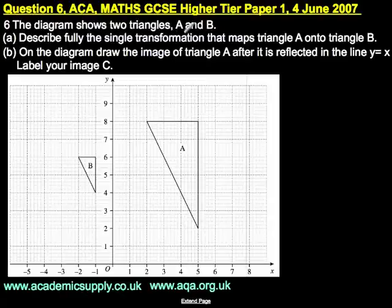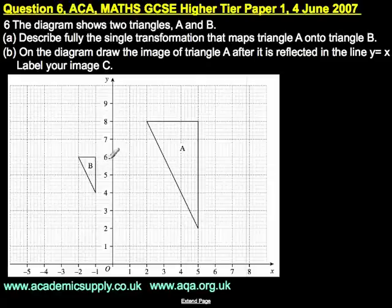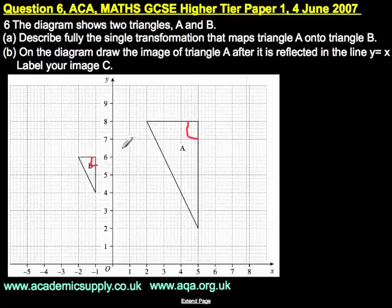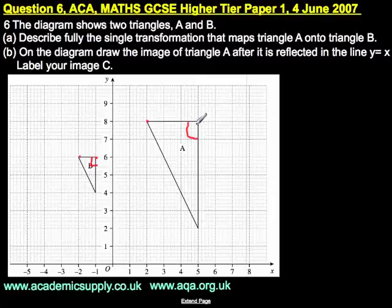The diagram shows two triangles, A and B. Describe fully the single transformation that maps triangle A onto triangle B. We can see that triangle A is a right-angled triangle with the right angle here, and triangle B is also a right-angled triangle. We can see that certain points on triangle A match up with corresponding points on triangle B, with the right angle points corresponding to each other.